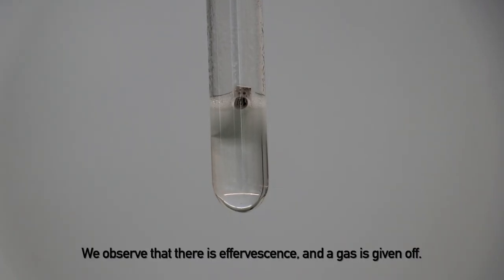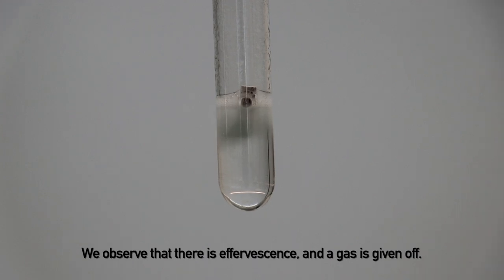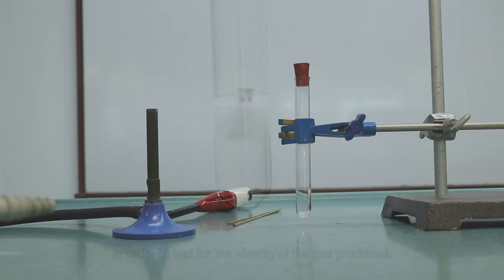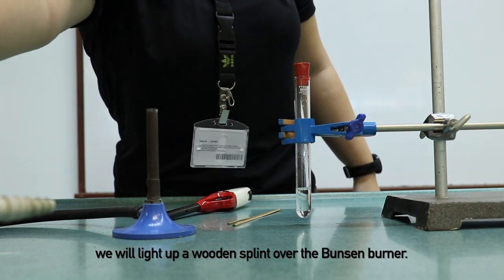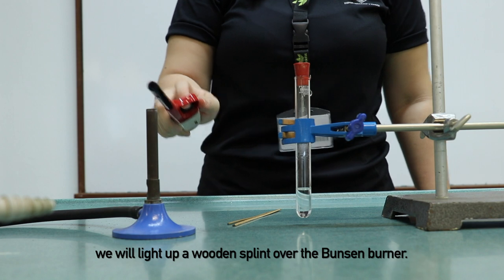We observe that there is effervescence and a gas is given off. In order to test for the identity of the gas produced, we will light up a wooden splint over the Bunsen burner.